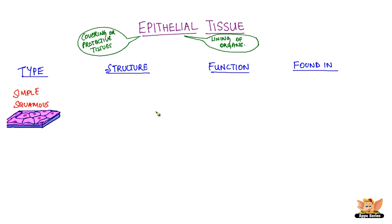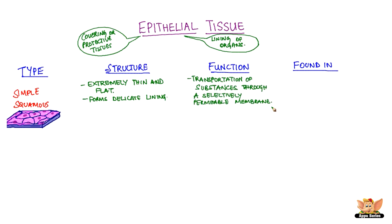Simple squamous tissue has cells which are extremely thin and flat and are suitable for delicate lining in organs. They help in transportation of substances through a selectively permeable membrane. This tissue is found in the esophagus, lining of mouth, etc.